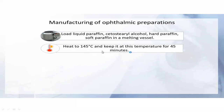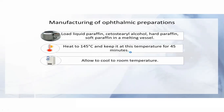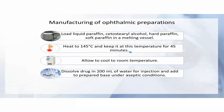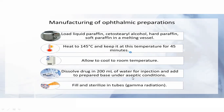The mixture is heated at 145°C and kept at that temperature for 45 minutes, then allowed to cool to room temperature. The drug is dissolved into 200 ml of water for injection — water for injection is used because it is already sterile — and added to the prepared base under aseptic conditions. The ointment is then filled into tubes and sterilized by gamma radiation.